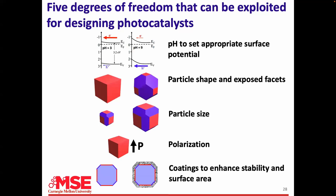We have at least five degrees of freedom for designing these photocatalysts: the pH in the reactor, the particle shape, the particle size, ferroic perovskites with internal polarization for charge separation, and thin coatings on particles which can increase reactivity and protect the surface. A material like strontium titanate — the alkaline earth component is easily leached into solution. Leave it in water and sunlight for a year and in the top 10 nanometers, all the strontium will be gone.